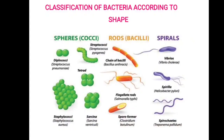The classification of bacteria according to their shapes is shown in the slide. Sphere-like structures include diplococci and streptococci, as well as tetracocci, sarcina, and staphylococci. Rod-like structures include chains of bacilli, bacillus, and flagellated rods with spore formation. Spiral-like structures include vibrio, spirilla, and spirochaetes.